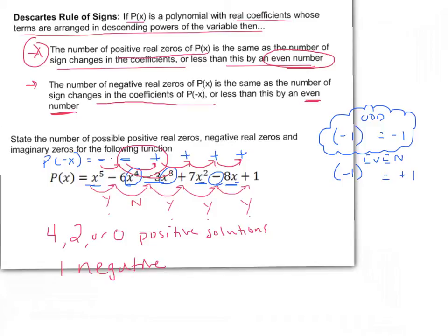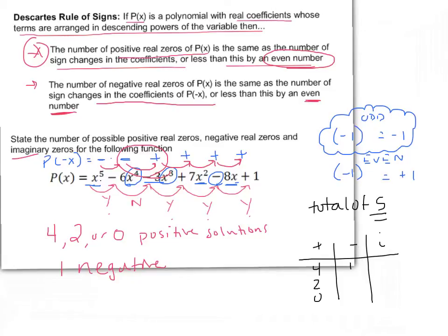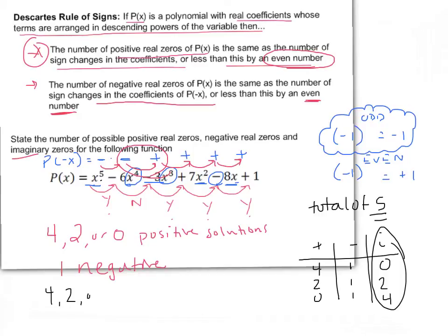Since the total number of solutions must equal the highest degree — here, five — we build a chart. Positive solutions could be four, two, or zero; negative solutions can only be one. If we have four positive and one negative, that's five, so zero imaginary. If two positive and one negative, we need two imaginary. If zero positive and one negative, we need four imaginary. Each row adds up to five, so imaginary solutions could be zero, two, or four.